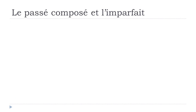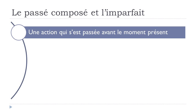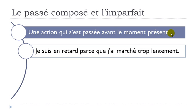Now, le passé composé. The first use is une action qui s'est passée avant le moment présent — an action that took place before the present moment. For example: je suis en retard parce que j'ai marché trop lentement. Je suis en retard is the present — I am late — and j'ai marché trop lentement uses the passé composé to give the reason: I walked too slowly.